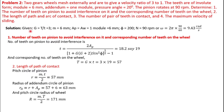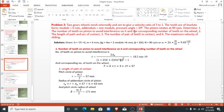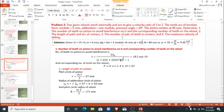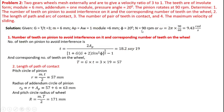The given values are: velocity ratio G equals capital T divided by small t, where capital T is the number of teeth on the big gear and small t is the number of teeth on the small gear. Module m is 6 mm, addendum AP equals AW equals one module which is 6 mm, pressure angle φ is 20 degrees, and N is 90 rpm. From that we calculate omega as 2πN divided by 60.